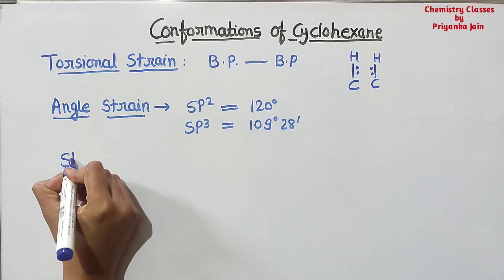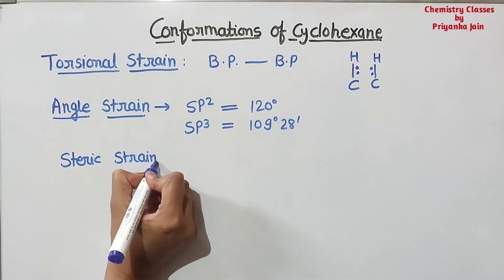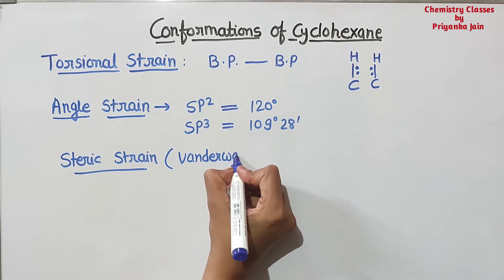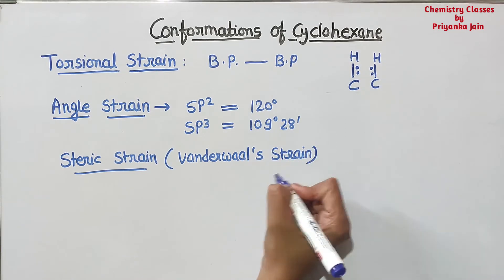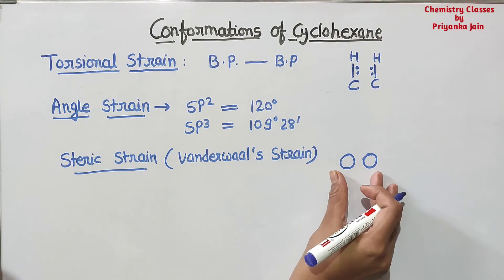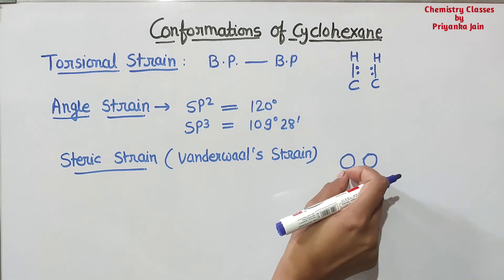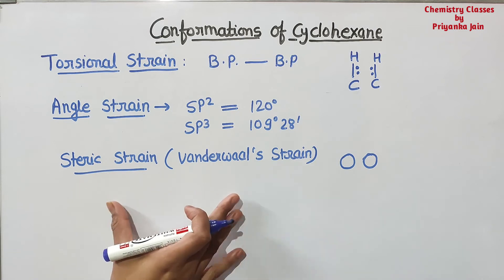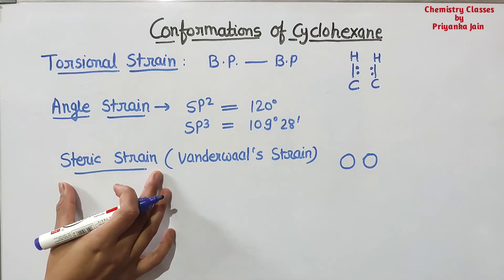The next thing is steric strain, also known as the van der Waals strain. It is generated whenever there is crowding — two larger groups presented very close to each other. If the distance between these two is less than the sum of their van der Waals radii, there will be steric crowding, and due to this there will be strain in the molecule. Such type of strain is called steric strain.